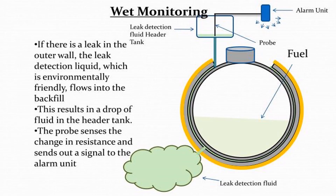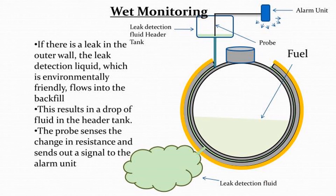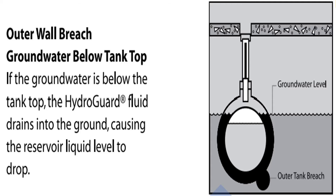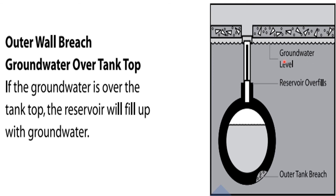As long as it reads normal you're in compliance. If there were to be a leak on the secondary tank, your brine solution level would drop, causing the sensor to go into alarm. You call a contractor to assess the situation — they'd likely try to put brine solution back in, and if it keeps dropping they know there's a release to the outside. This can also happen with high groundwater — the level will drop to the height of the groundwater, but not as significantly as it would with no groundwater. Conversely, if the groundwater level is higher than the reservoir it'll cause the liquid level to go up inside the reservoir and trigger an alarm as well.